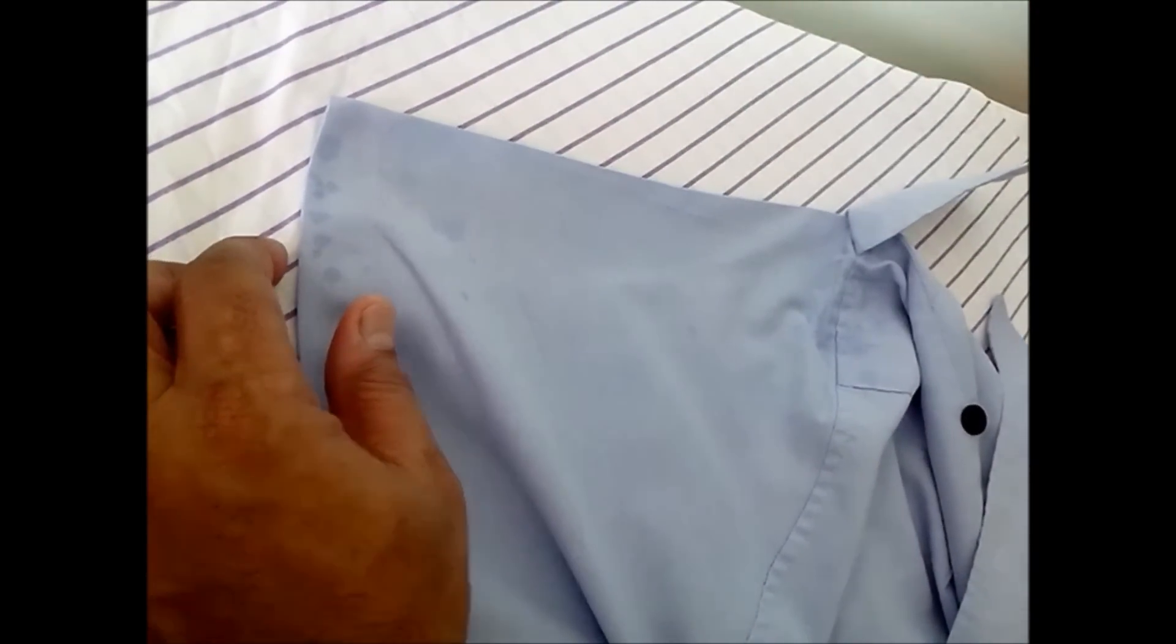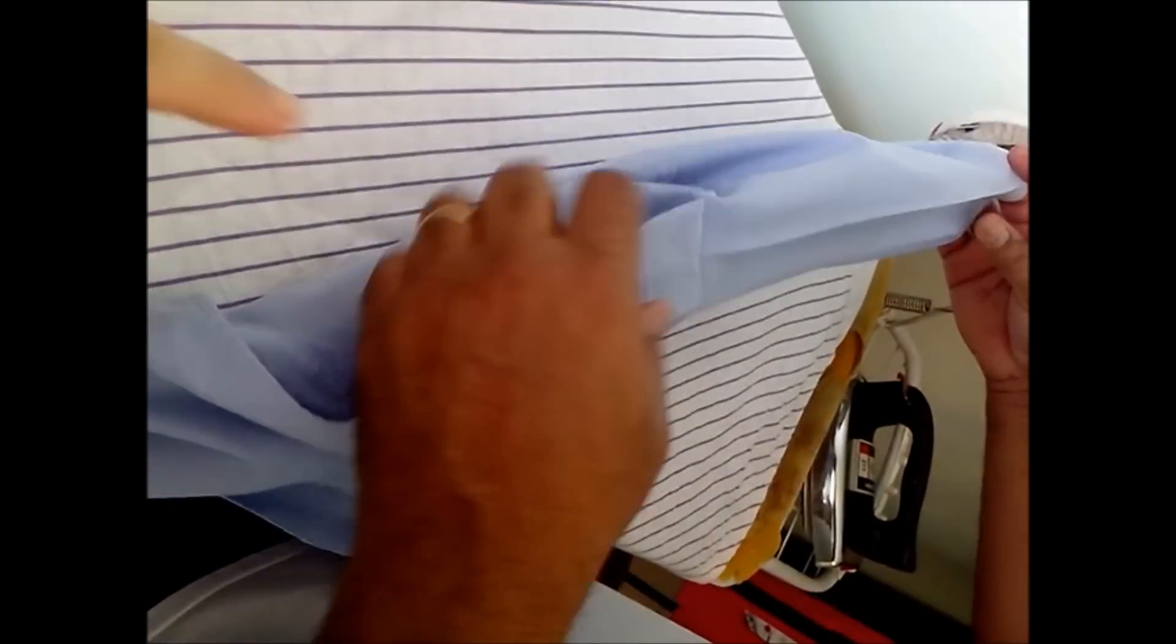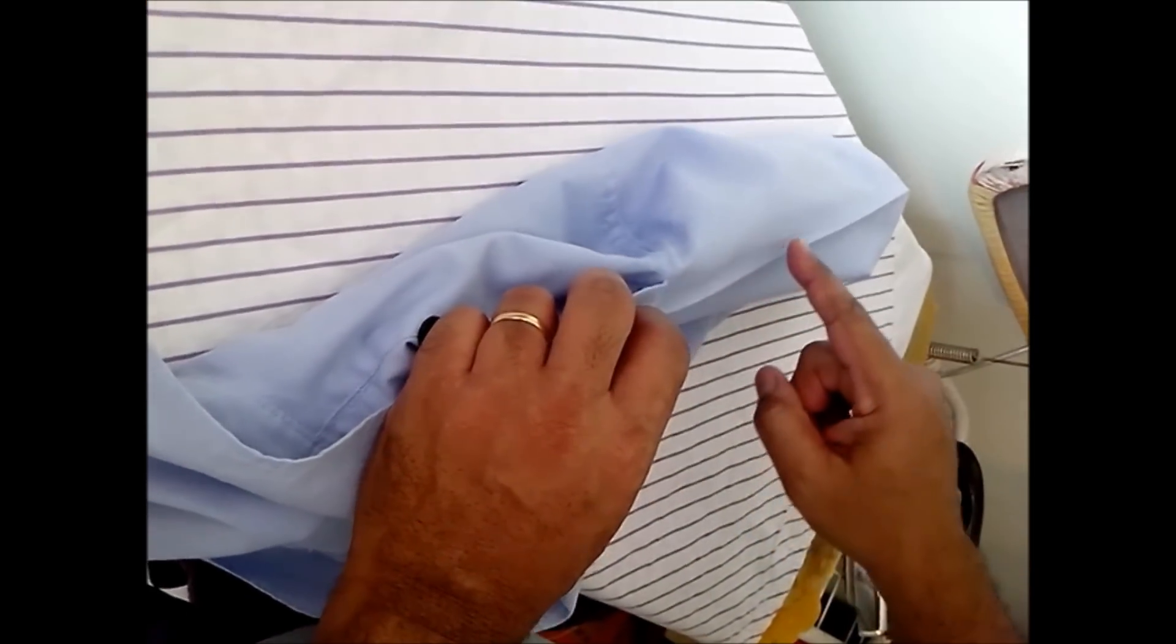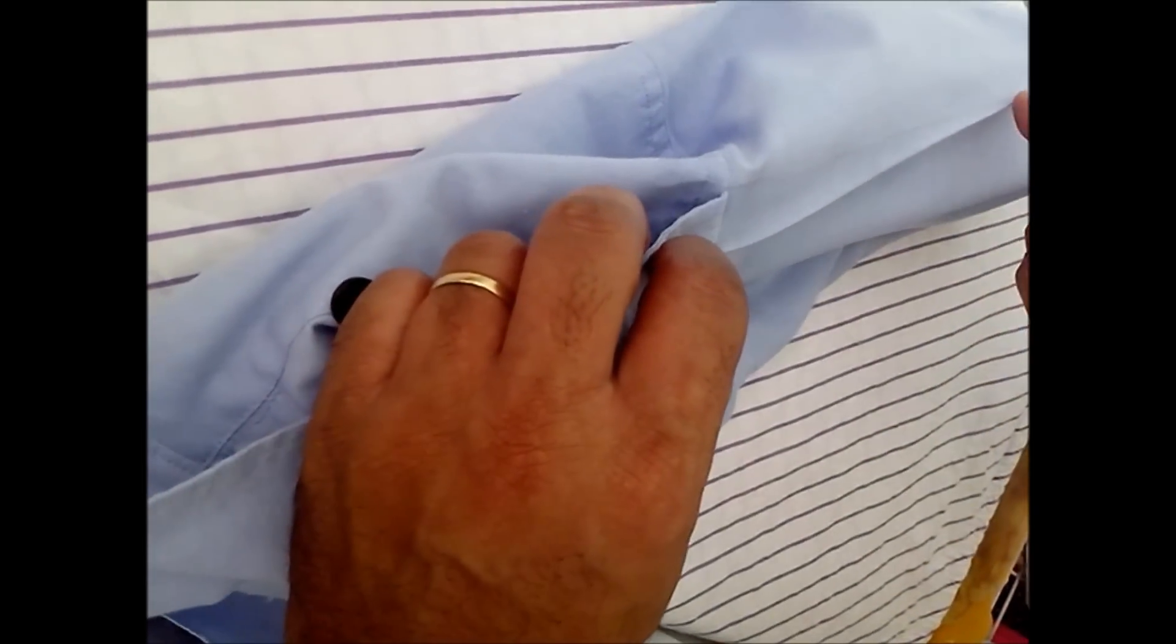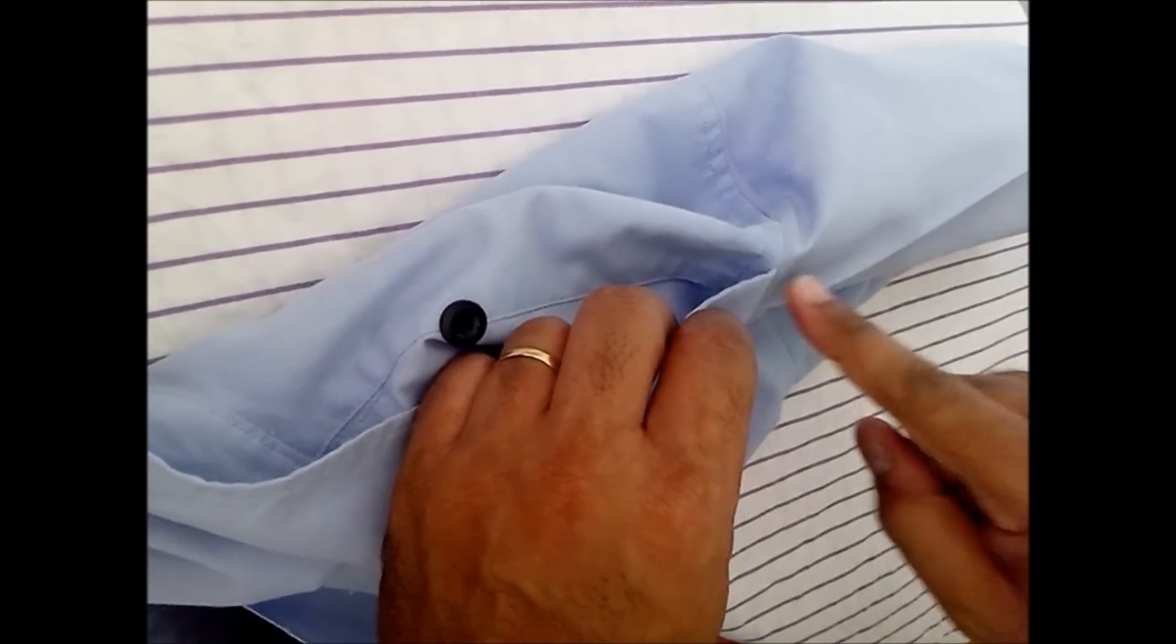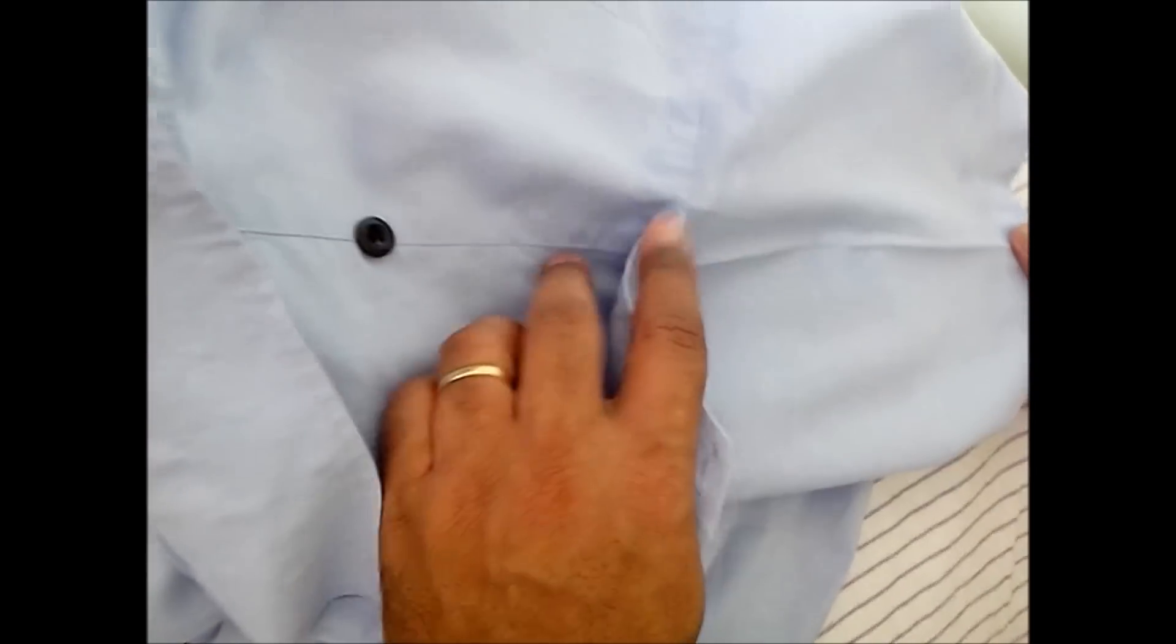Bom, vamos lá. Agora com o vinco, você acertou conforme a linha. Esse vinco aqui, depois mais tarde você pode tirar jogando um pouquinho mais de água. Aí você passa mais uma vez, ele vai saindo. Pronto, primeira etapa, está alinhado com a linha do ombro.